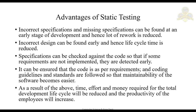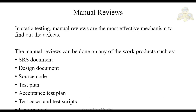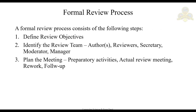The next topic is manual reviews — how we can do reviews or check documents. In static testing, manual reviews are the most effective mechanism to find defects. Manual reviews can be done on any work product such as your SRS document, design document, source code, test plan, test cases, test script, user manual, etc. In manual reviews, we first talk about the formal review process. As the name suggests, it is formal — the reviews are done through a formal meeting.